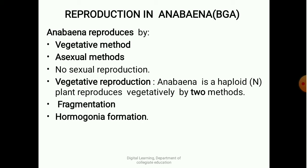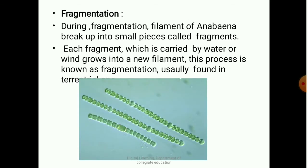Coming to the first one, fragmentation: since this alga is a filamentous one, the filaments break up into small pieces. Each piece is called a fragment, and each fragment, which is carried by water or wind, grows into a new thallus. This process is known as fragmentation. It is usually found in terrestrial species. In this image you can notice the filament of Anabaena breaking up — that is fragmentation taking place.